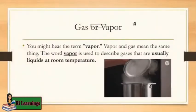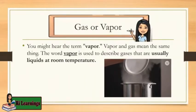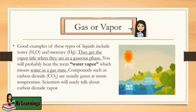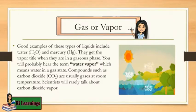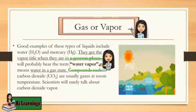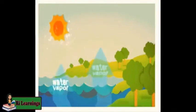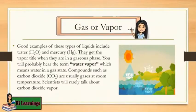Gas or vapor — what's the difference? Vapor and gas mean the same thing. The word vapor is used to describe gases that are usually liquids at room temperature. Good examples include water or H2O and mercury. They get the vapor title when they are in a gaseous phase — you will probably hear the term water vapor, which means water in a gas state. Compounds such as carbon dioxide are usually gases at room temperature, so scientists will rarely talk about carbon dioxide vapor.